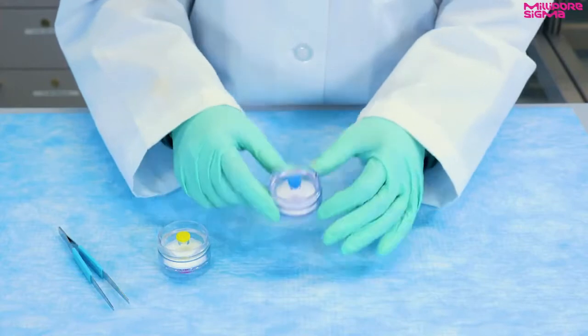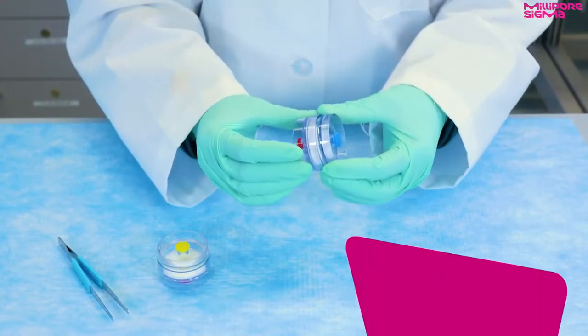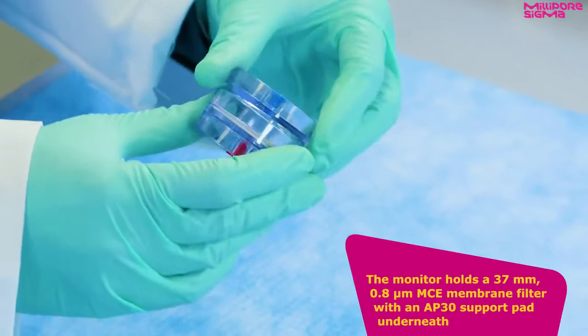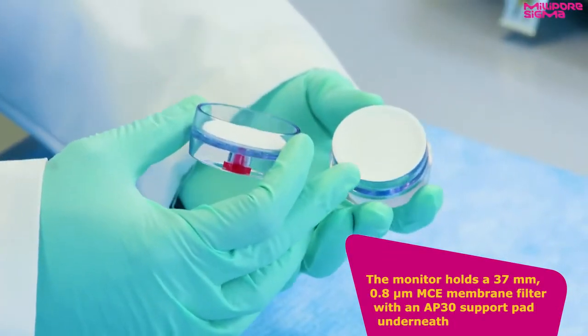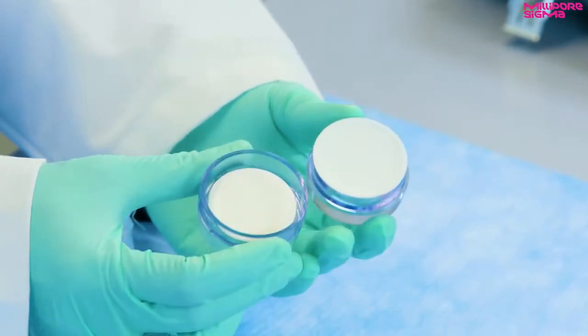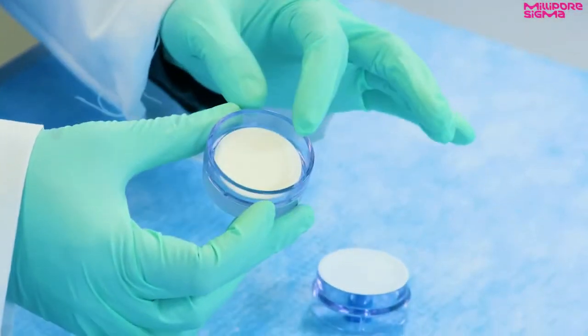Now let's take a look at the two-piece monitor in detail. The monitor holds a 37 millimeter 0.8 micrometer MCE membrane filter with an AP-30 support pad underneath. This thick filter pad provides support for up to 100 psi maximum pressure.